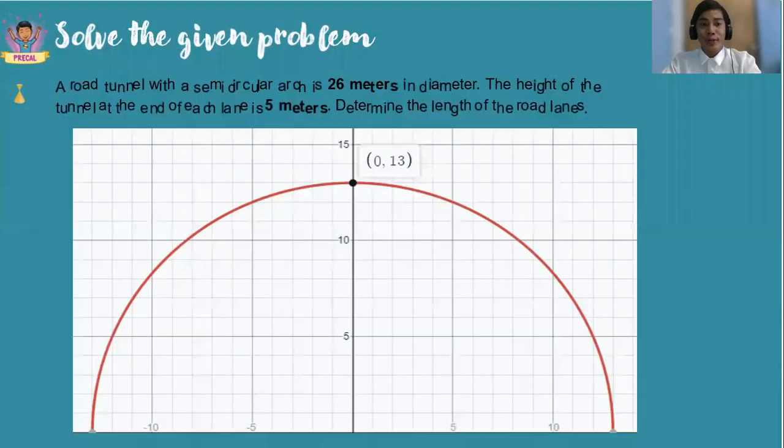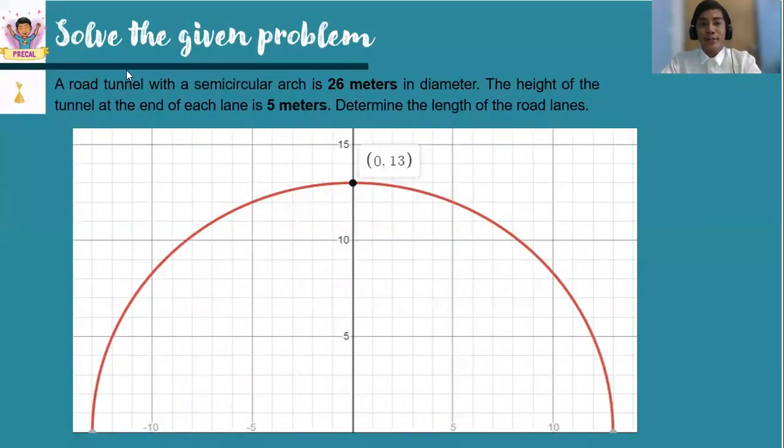Let's proceed to problem number one. A road tunnel with a semicircular arc is 26 meters in diameter. The height of the tunnel at the end of each lane is 5 meters. Determine the length of the two road lanes.